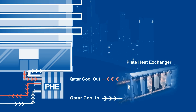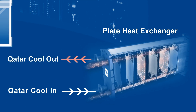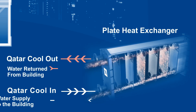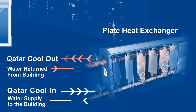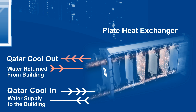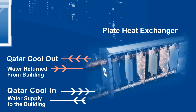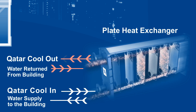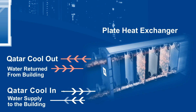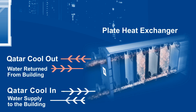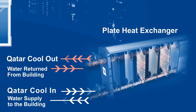The chilled water flows between the plates, separating the plant's water from the building's water, which is pumped through the building pipes into the fan coil units, where fans push the air against the coils, cooling the air and pushing it into the room.